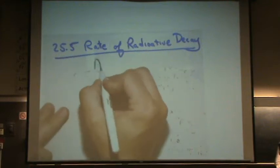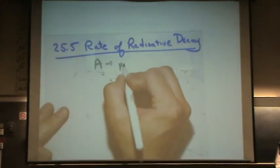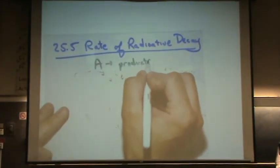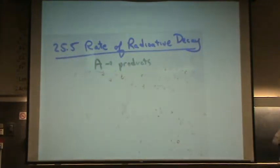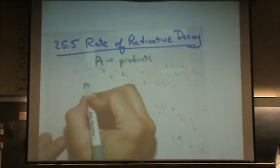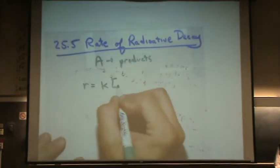Let's say we have A goes to products, whatever those products are. This is for a nuclear reaction or radiation. You know that the rate for first-order is K times A.